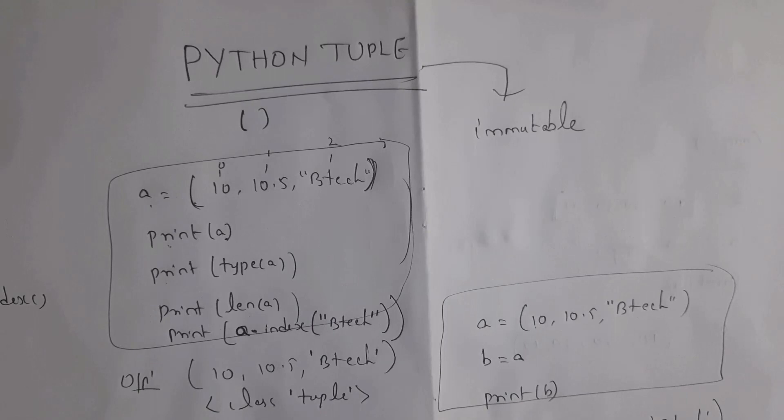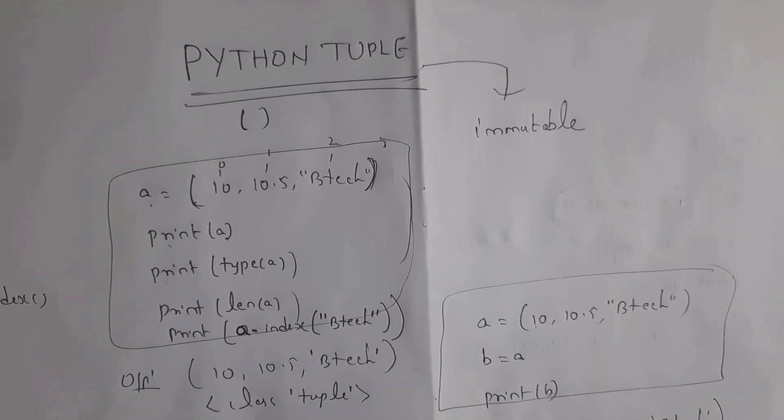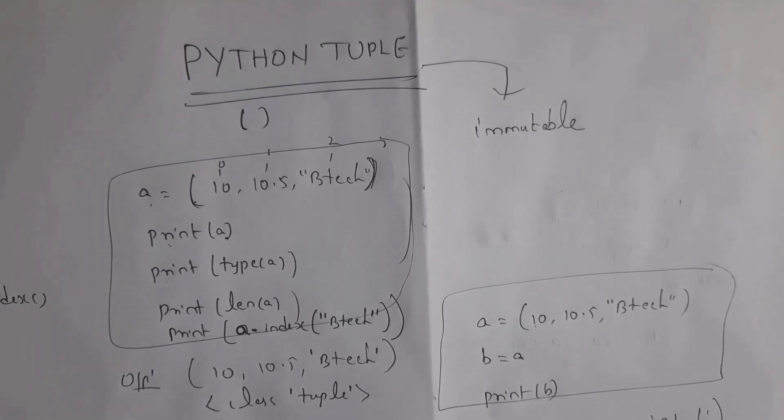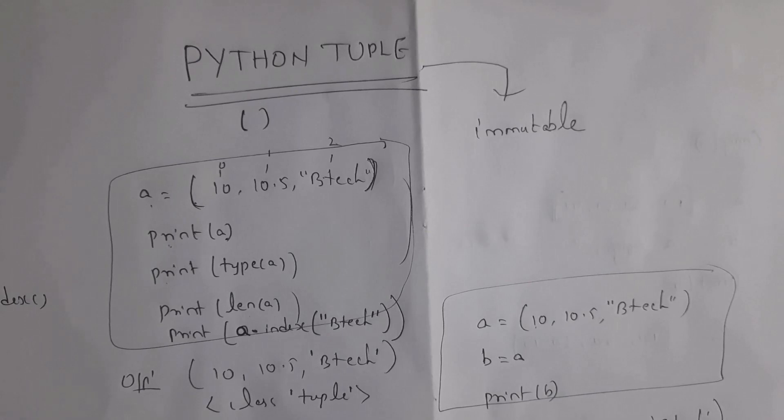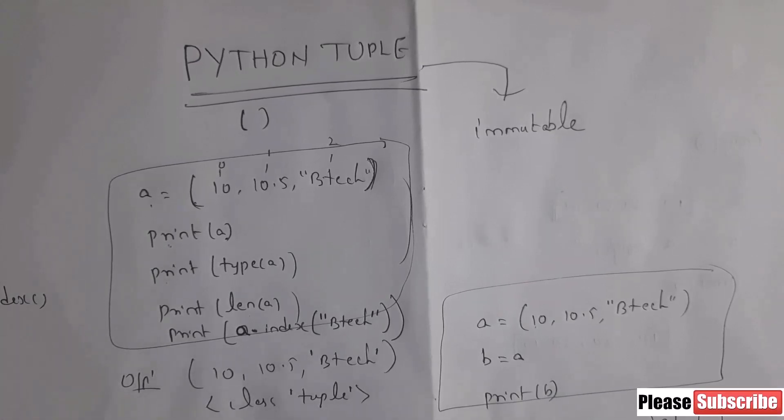Python list is mutable. Mutable is nothing but changeable. Once we create any list, then we can perform various operations on that particular list by using various built-in methods like adding items in your list, removing items in your list, and modifying particular item and so on.